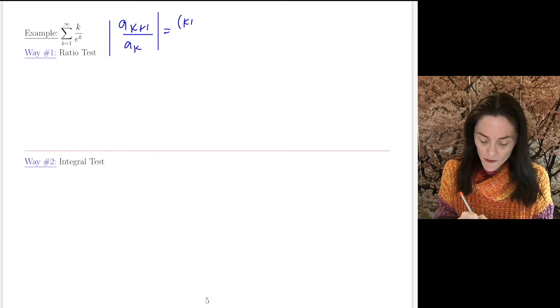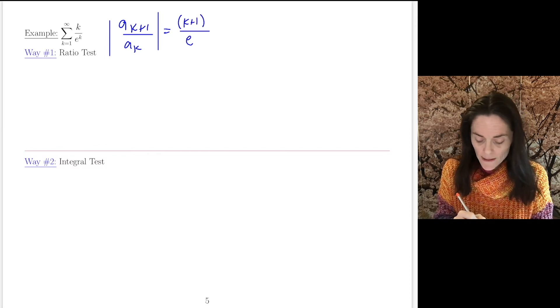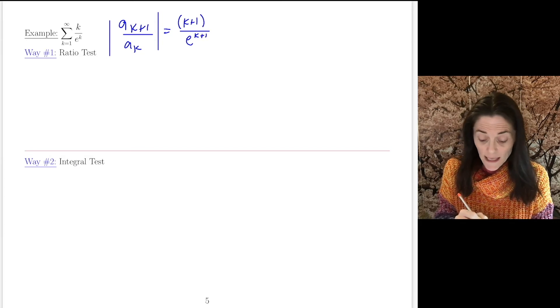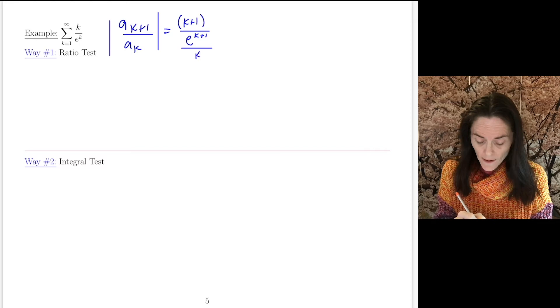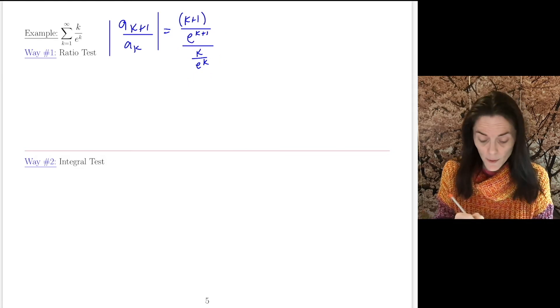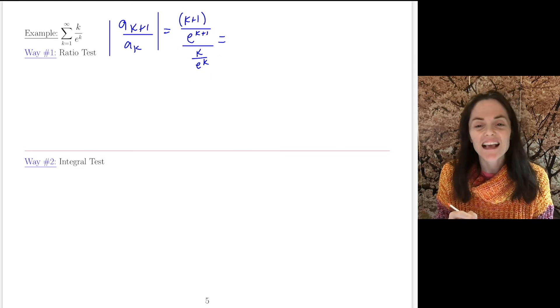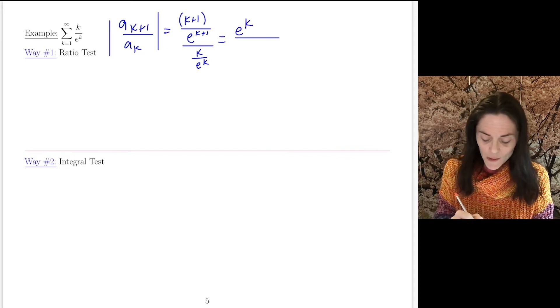But this is (k+1) over e^(k+1). That's the k+1st term. And then divided by k over e^k. And then, when I invert and multiply, I will try to line things up that go together. So I have, in my numerator, e^k.